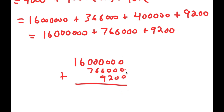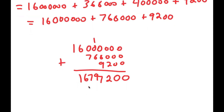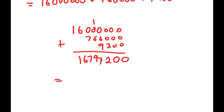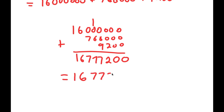And 100 times 92 is 9200. This gives us 16,000,000 plus 768,000 plus 9200. Adding these up: 16,000,000 plus 768,000 plus 9200 equals 16,777,200. So the answer to 2 to the power of 24 minus 16 is 16,777,200.